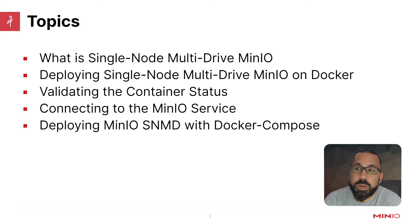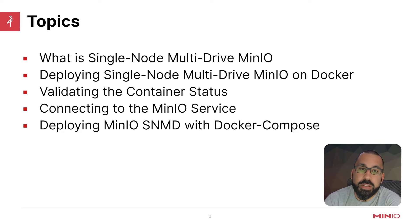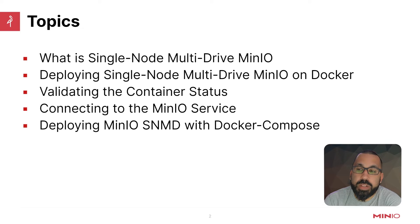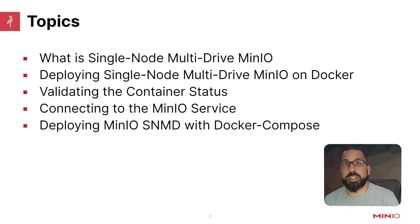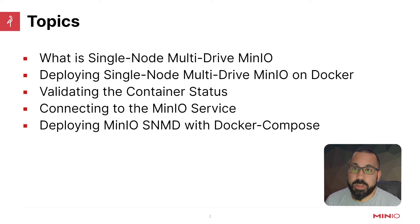Once I've shown you how to deploy single node multi-drive MinIO on top of Docker, we're going to show you how to validate the container status, make sure everything looks good inside those containers, connecting to the MinIO service using both the UI as well as the MC client, and then deploying MinIO single node multi-drive with Docker Compose. We're going to do that full Docker Compose — these commands get far too complex to make them meaningful from the command line directly.